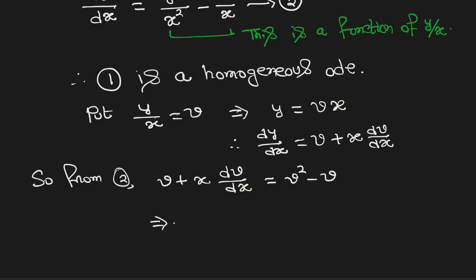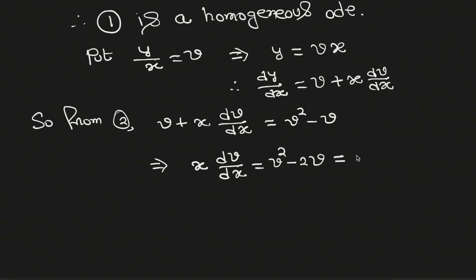This can be rewritten as x dv/dx equals v² minus 2v, which can be written as v times (v minus 2).